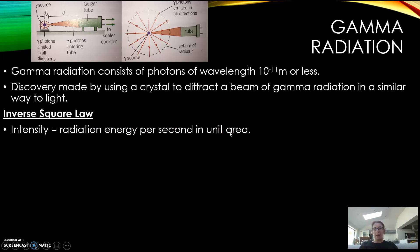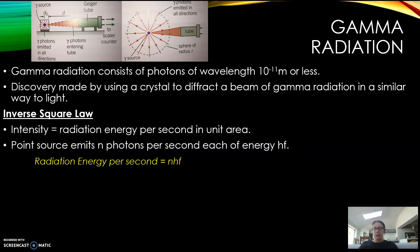It follows an inverse square law. The intensity is equal to the radiation per second in unit area. A point source emits n photons per second, each with energy hf. So the energy of one photon is hf, and the source emits n photons, so the total amount of energy released by the source will be n times hf - the number of photons times the energy of each photon.